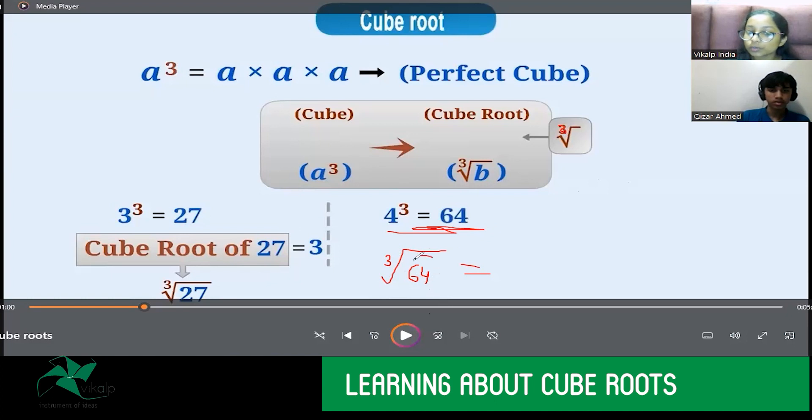What will be the cube root of 64? If the cube of 4 is 64, so the cube root will be 4. Yes. Because we are doing the inverse operation. We are doing the opposite.